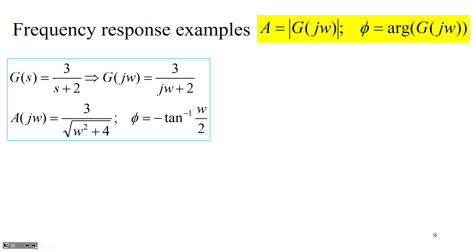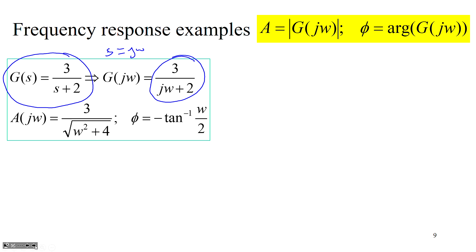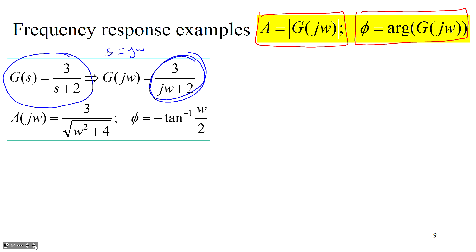Let's give some examples. Start with G(s) = 3/(s+2). Simply replacing s by jω gives G(jω) = 3/(jω+2). Using the definitions — gain is the modulus of G(jω) and phase is the argument of G(jω) — for the complex number 3/(jω+2), the gain is 3 over the square root of (ω²+4), and the phase is −tan⁻¹(ω/2).